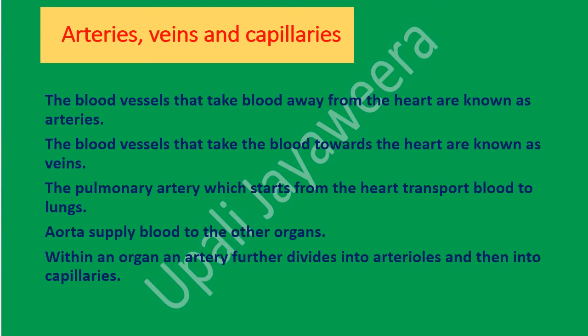Arteries, veins, and capillaries. The blood vessels that take blood away from the heart are known as arteries. The blood vessels that take blood towards the heart are known as veins. The pulmonary artery transports blood to the lungs, where blood is purified and gaseous exchange takes place. The aorta supplies blood to the other organs. Within an organ, an artery further divides into arterioles and then into capillaries.